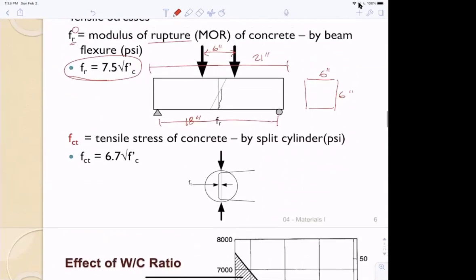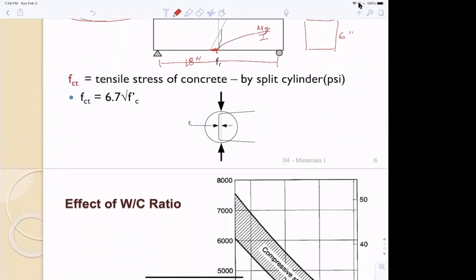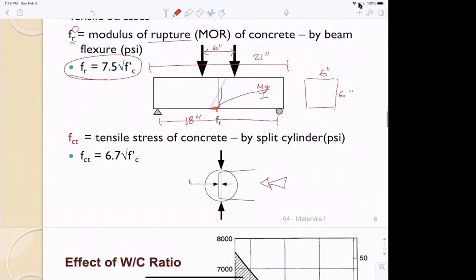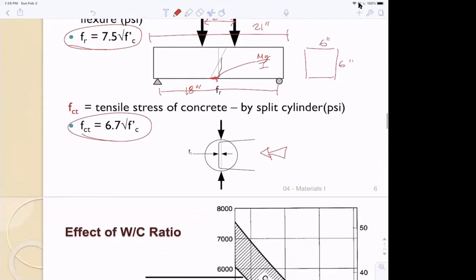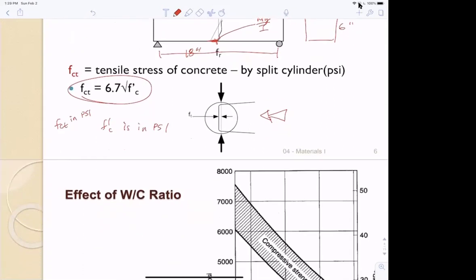The stress here is a tensile strength and you get it by doing MY over I. The tensile strength we got in 3210 was this Brazilian test or split cylinder test, and you learn the formula for that in CE 3210. To get these two strengths from the compressive strength, the rupture strength is 7.5 square root F prime C, and the tensile strength is 6.7 square root F prime C. F prime C is in PSI. To make this work, you always use PSI. Anytime you see a square root F prime C in this class, it's PSI.